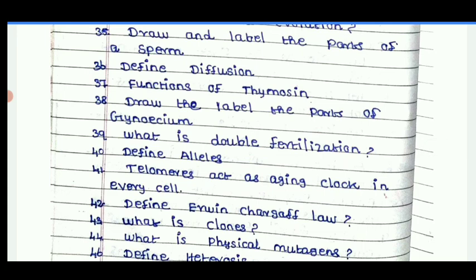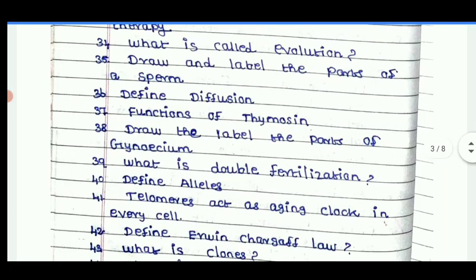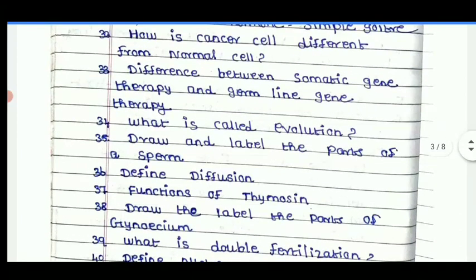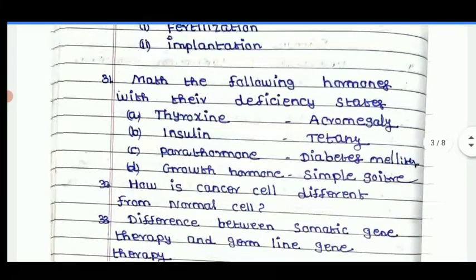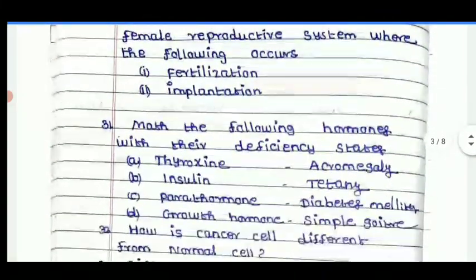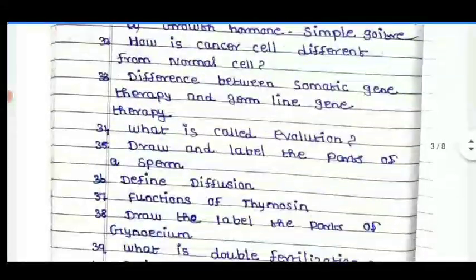Telomeres act as an aging clock in every cell. Define Alleles. What is Double Fertilization? Draw and label parts of Gynetium. Function of Thymosin. Define Diffusion.